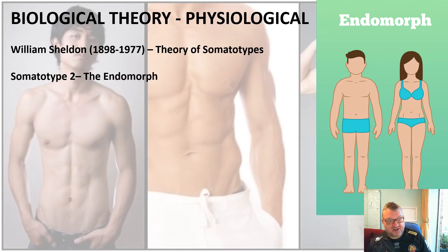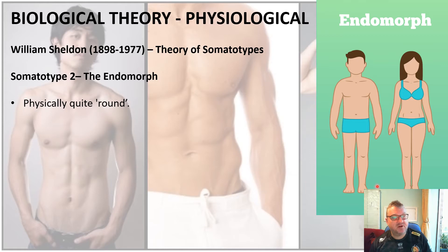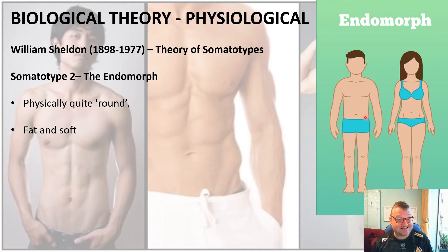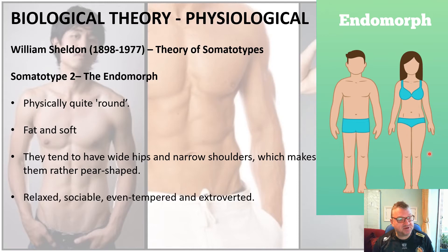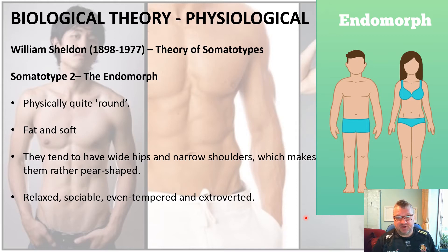His second somatotype was the endomorph. Endomorphs are physically quite round — fat and soft — and tend to have wide hips and narrow shoulders, giving them a more pear-shaped body. Sheldon believed that endomorphs were relaxed, sociable, even-tempered and extroverted.